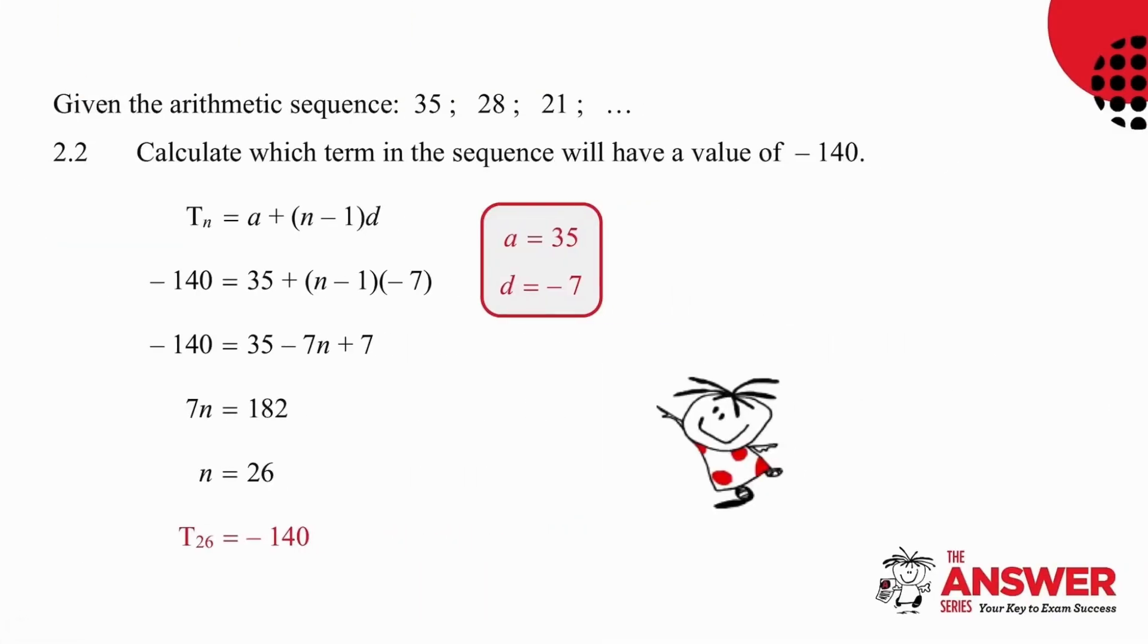In question 2.2 we are asked to calculate which term in the sequence will have a value of minus 140. We know that this sequence is arithmetic. We have the formula given as Tₙ equals a plus (n minus 1)d.